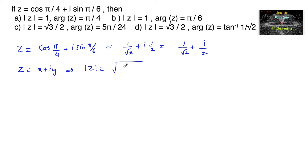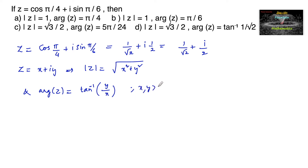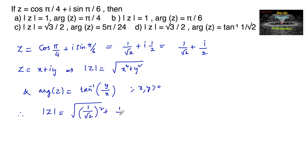For z = x + iy, mod z is equal to √(x² + y²), and argument of z when both x and y are positive is tan⁻¹(y/x). Here we can see both x and y are positive when comparing with x + iy, and hence mod z can be computed.